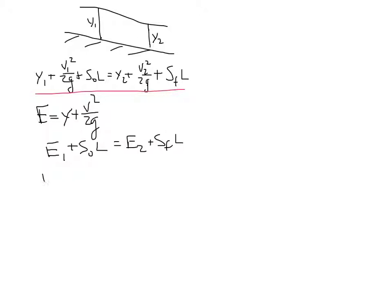Or I can rewrite this as the change in energy going downstream, so E2 minus E1 equals S0 minus SF times L. Now, from this point, we can go in a few different directions.